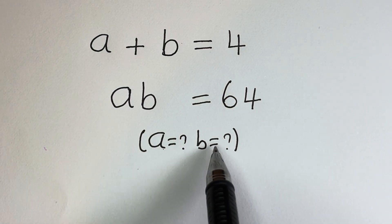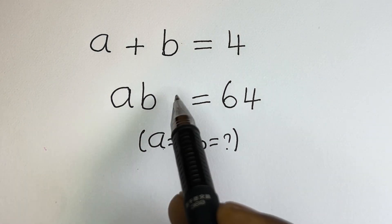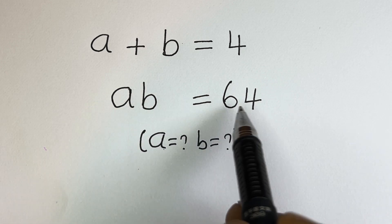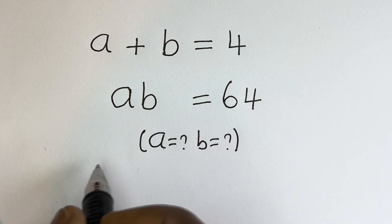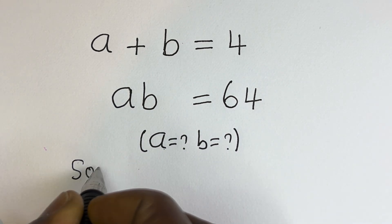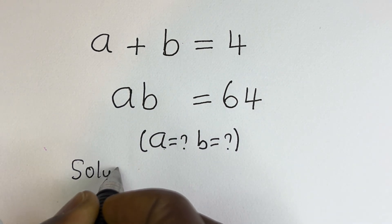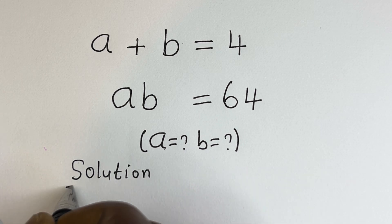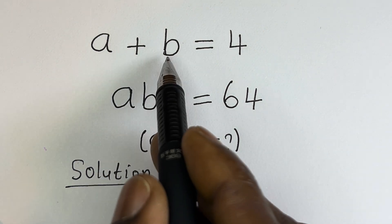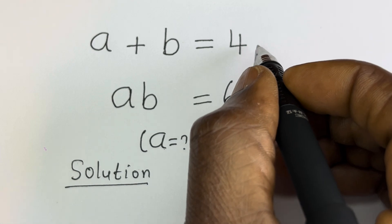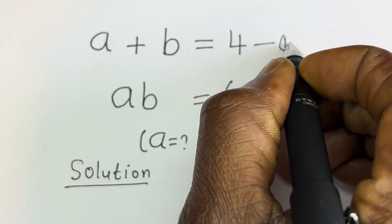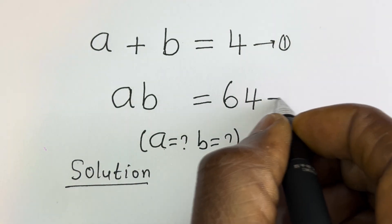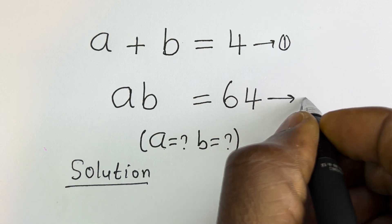Hello. How to solve for a and b in this equation: a plus b is equal to 4, and a times b is equal to 64.